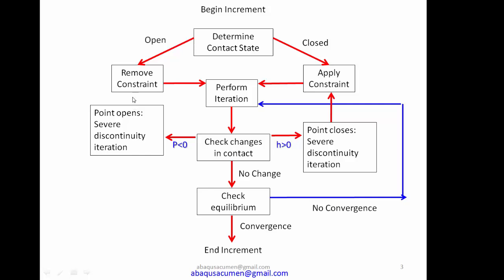The iteration continues until the same contact status is seen in two consecutive iterations. For example, if two nodes are open and ten are closed, and the same nodes have the same condition in both iterations — two open and ten closed — then the severe discontinued iteration is considered converged, and Abaqus proceeds to check equilibrium.